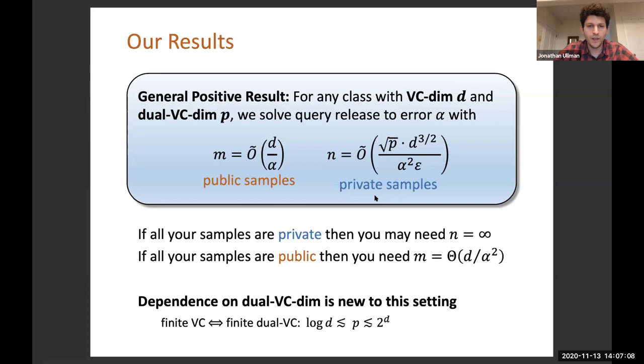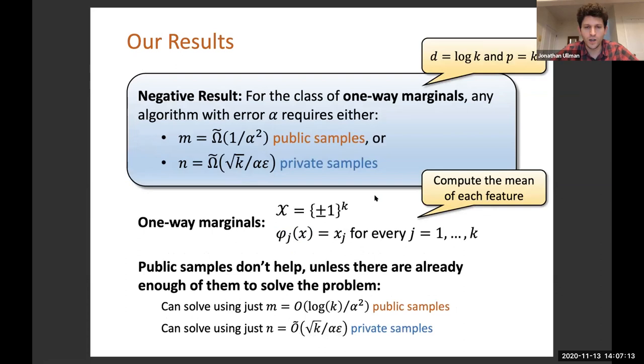Lastly, we also have a negative result for one particular class of queries. We consider a special class of queries called one-way marginals. It's a very simple class of queries where you imagine that your data consists of k binary features. For every feature, you have one query which just asks you what proportion of individuals have a plus 1 for that feature.